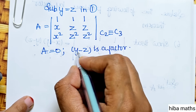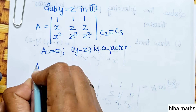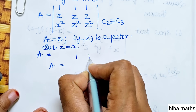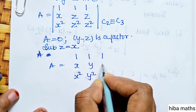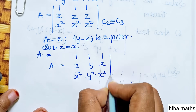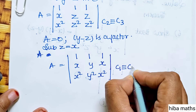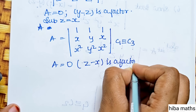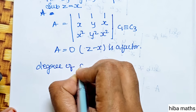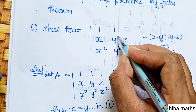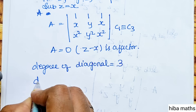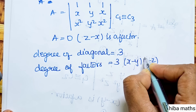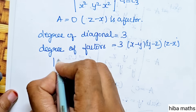Similarly for the last factor: substitute z equal to x. Then A has entries: 1,1,1; x, y, x; x squared, y squared, x squared. So C1 is identical to C3, and A equals 0. Therefore z minus x is a factor. We can explain x minus y, y minus z, z minus x — degree 1 each, giving degree 3 total.